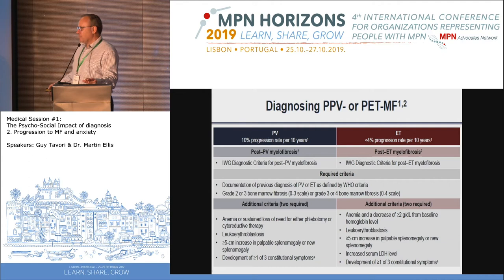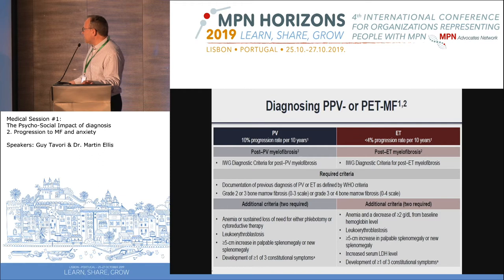The second required criterion is fibrosis. For post-PV fibrosis, we need PV and fibrosis; for post-ET fibrosis, we need ET and fibrosis. Fibrosis is a bone marrow biopsy diagnosis made by a pathologist, who grades it as scar tissue in the bone marrow on a scale of 0 to 3 or 0 to 4, depending on which of two different scales the pathologist uses.